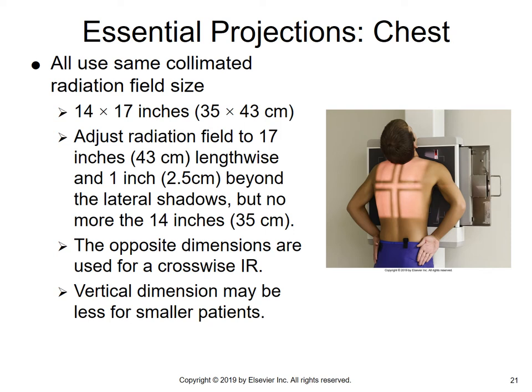We use the same collimated radiation field size, 14 by 17. If it's a sthenic patient, you're going to place the cassette into the bucky lengthwise. But if you have a heavier patient or a patient with broader shoulders, you'll use the 14 by 17 turned crosswise in the bucky. A vertical dimension may be less for small patients. The patient shown is positioned properly — notice the central ray is going down the MSP and at the very bottom of the scapulae.